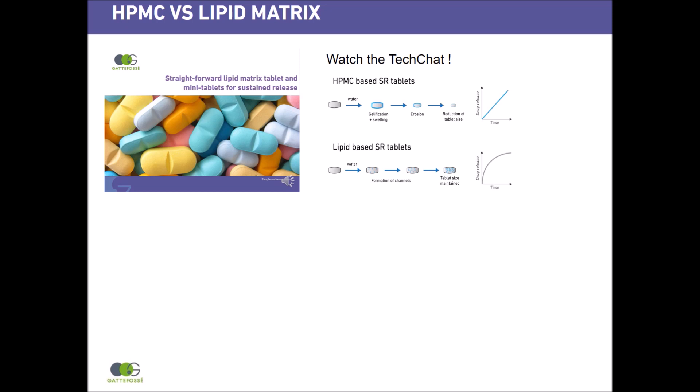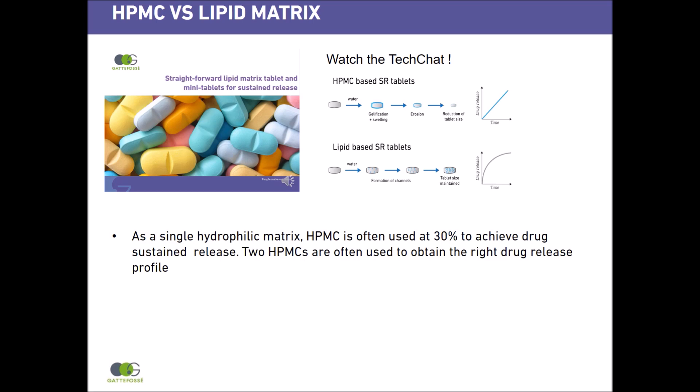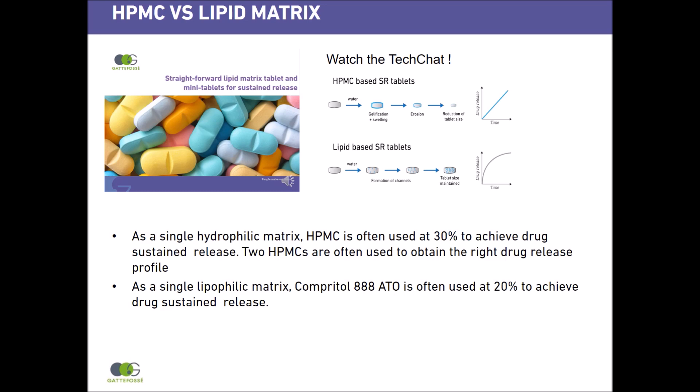In this tech chat, you have the explanation and comparison between an HPMC matrix and a lipid matrix. When working with a single HPMC matrix, generally you use this excipient around 30%, and generally you use two different grades of HPMC with different viscosity in order to obtain the right drug release profile. With a lipid matrix — here with Compritol 888 ATO — you just need this excipient, and generally you use it around 20% to achieve drug sustained release.